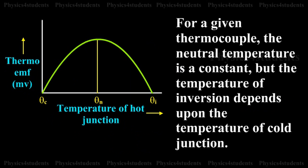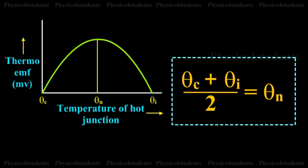For a given thermocouple, the neutral temperature is a constant, but the temperature of inversion depends upon the temperature of cold junction. These temperatures are related by the following expression.